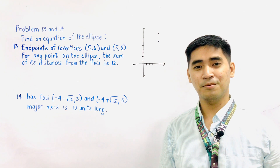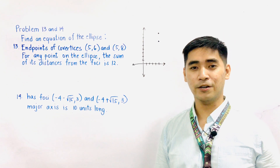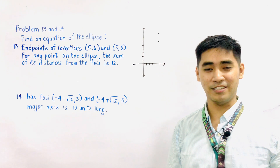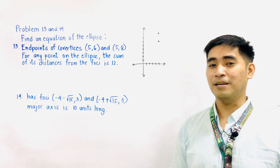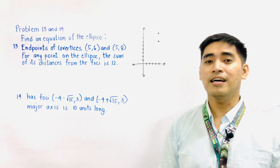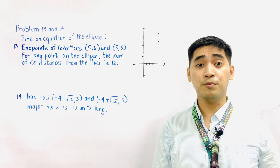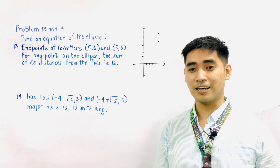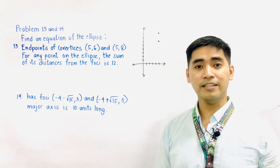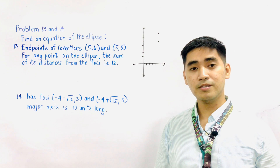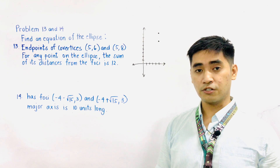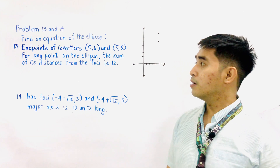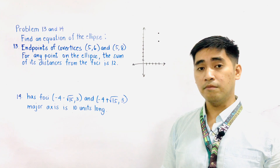Hi Judgers, welcome to another segment of 1RDWOG Memorial High School Senior High School Math TV. Last time, we were able to discuss and find the equation of an ellipse when we are given different conditions. Today, we will continue our discussions with finding the equation of an ellipse given conditions. For today, we'll be having problem 13 and problem 14.